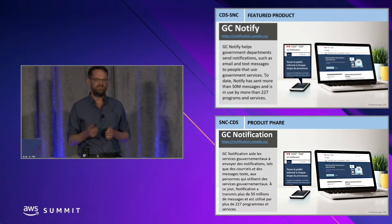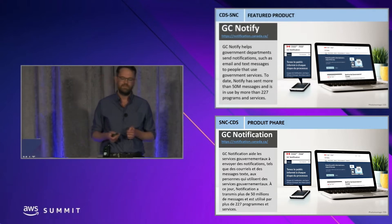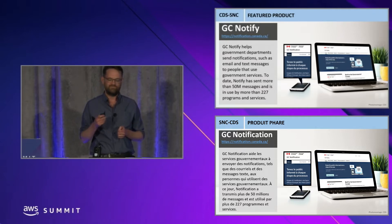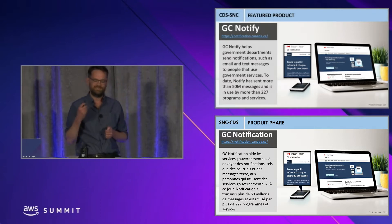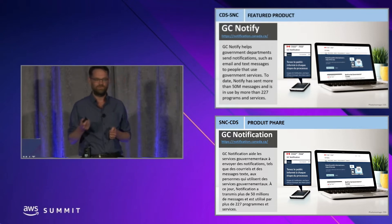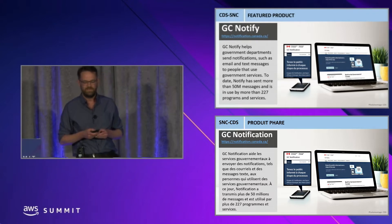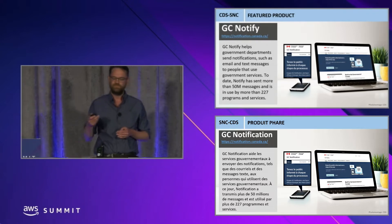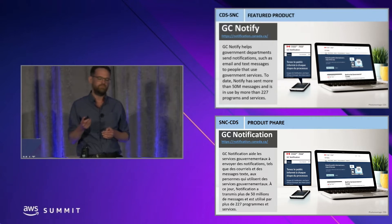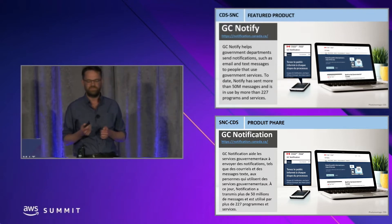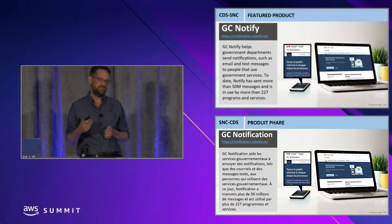GC Notify helps government departments send notifications such as email and text messages to people that use government services. Since November 2019, Notify has sent over 50 million messages and is in use by over 227 programs. One of the hardest things in government is to procure an external service, but Notify provides an easy-to-use API with no procurement overhead, allowing departments to go to market much faster. Notify is based on open source software forked from the UK government and currently runs as containers inside a Kubernetes cluster.